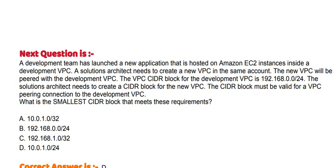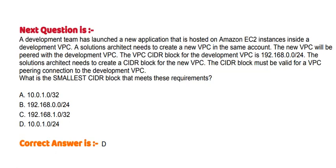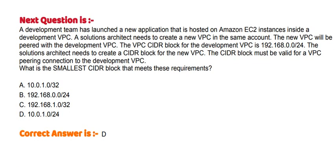What is the smallest CIDR block that meets these requirements? Option A: 10.0.0.0/32. Option B: 192.168.0.0/24. Option C: 192.168.1.0/32. Option D: 10.0.0.0/24.